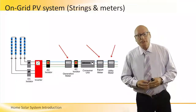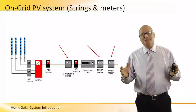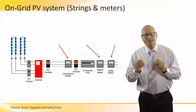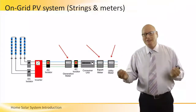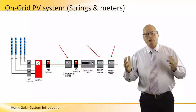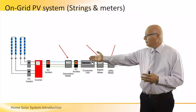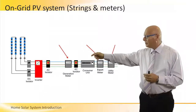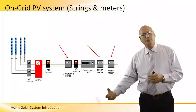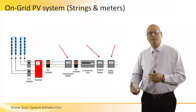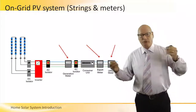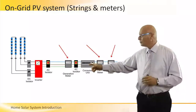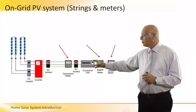In this picture we represent several configurations of strings and meters to show how a complete system looks in a top-level block diagram. On the left we see PV panels, which are connected in series, making up a string. A string is a group of panels connected together to generate electricity. This electricity goes to a DC isolator for safety precautions, and the output of the DC isolator goes to an inverter.